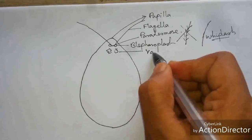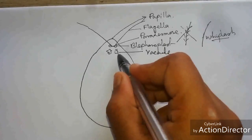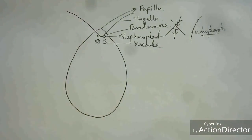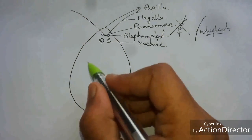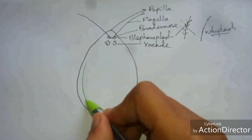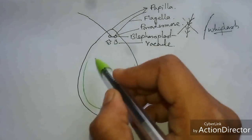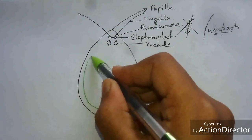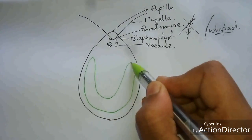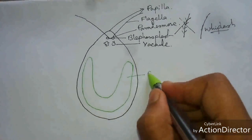This outgrowth is called papilla. Beneath the blepharoplast, two contractile vacuoles are present. Additionally, a large cup-shaped chloroplast is found in Chlamydomonas — this is the chloroplast.